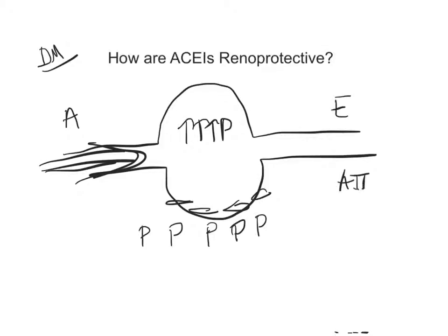Angiotensin 2 works here at the efferent arteriole. Normally, for those of us who do not have diabetes, if we're dehydrated or have some low flow state going on, your renin-angiotensin system kicks in so that angiotensin 2 clamps down on the efferent arteriole to maintain your pressure.